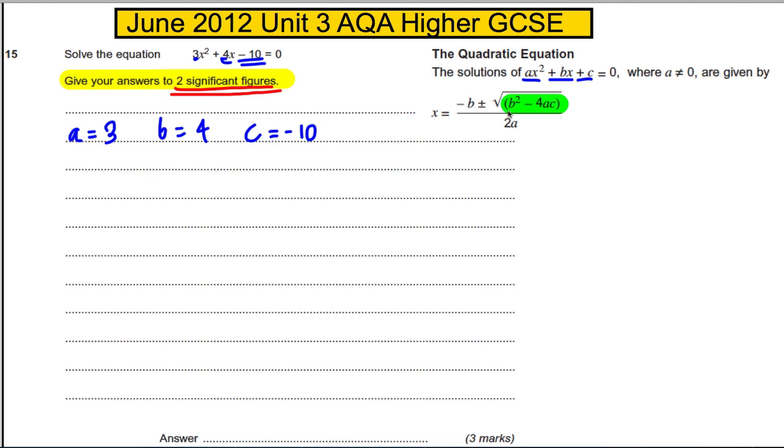Now first things first, work out b² - 4ac. Save yourself problems with your calculator—use brackets when substituting. b² - 4ac is 4² - 4 × a which is 3 × c which is -10. You must get that right, which is 16, and this turns out to be plus 120, which turns out to be 136.